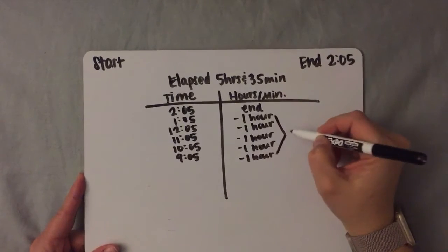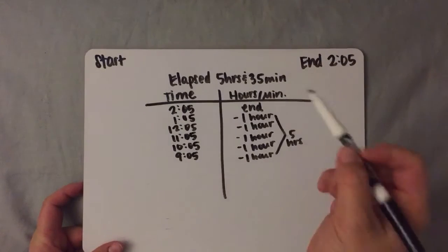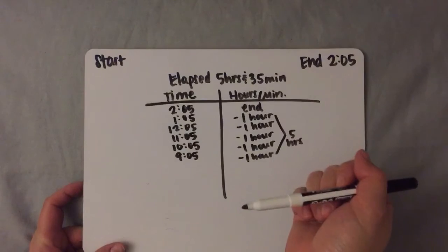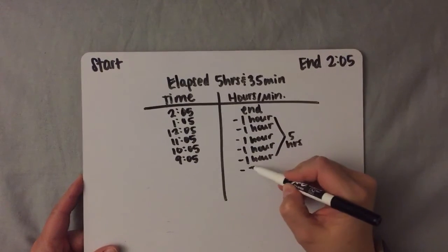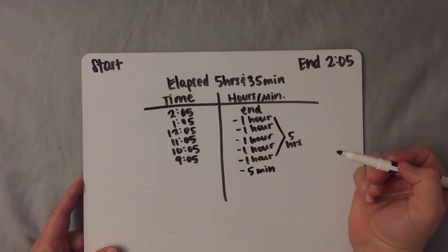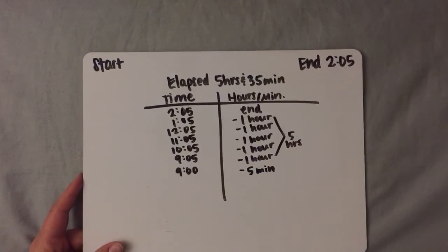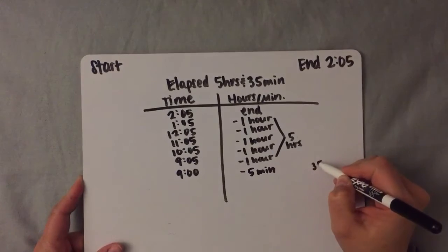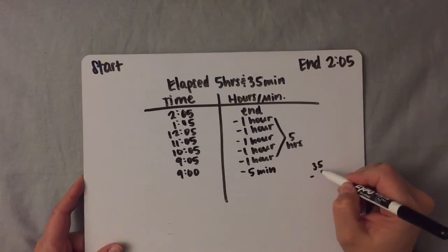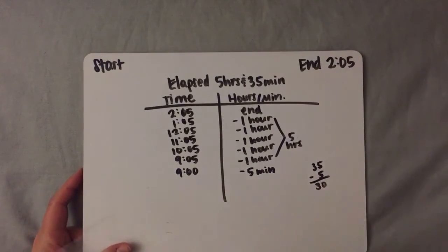Right here I have all five hours of our elapsed time, so I'm going to work on the minutes. I have 35 minutes I need to take away to find the start time. Well, I have five minutes before I get to nine o'clock, so I'm going to subtract that away from this time. That'll leave me with nine o'clock, so I have 30 more minutes. If you need help keeping track of the minutes, you can do that to the side — I did have 35 minutes of elapsed time and I used up five, so I have 30 left.